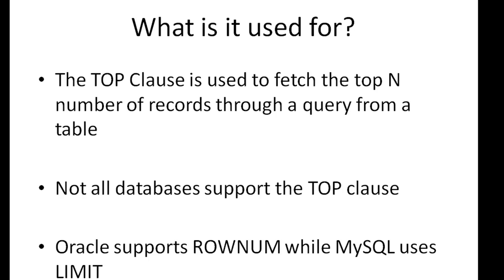The TOP clause is used to fetch a given number of records through a query from a table. It makes sense to have such a thing because sometimes you'd be working with tables that have quite a lot of data, like a thousand rows or five thousand rows. If you execute a normal SELECT * query on that table you'd get five thousand rows in your result set, but if you just want to see five or ten sample rows from that table, you can use a TOP clause to limit the number of rows you get.